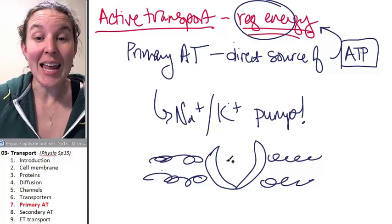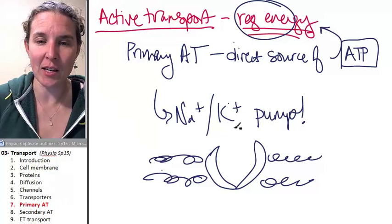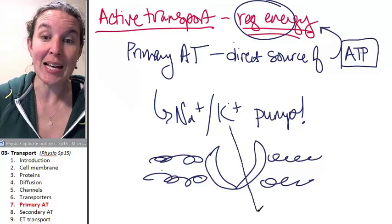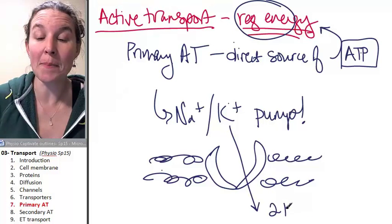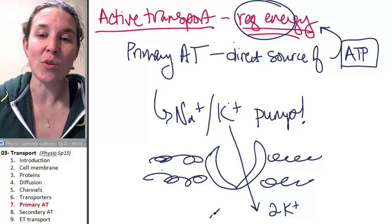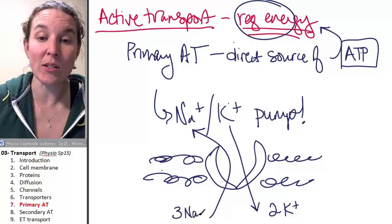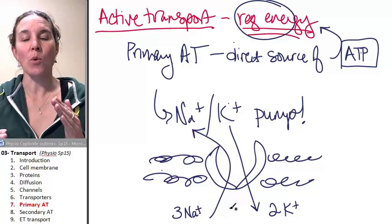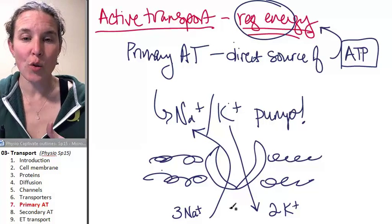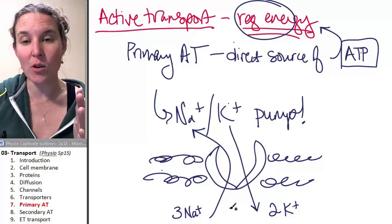This time, the net action is going to pump potassium. I have to think about this every time. Potassium ions are going to get pumped into the cell, two potassium ions. And sodium ions are going to get pumped out of the cell, three sodium ions. We're going to pump two potassiums in, three sodiums out.